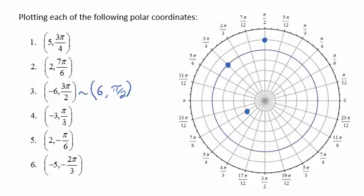Negative 3, pi over 3. We first go to the rotation of pi over 3. If it were a positive 3 radius, it would be located here. The negative 3 radius again reflects it about the origin and locates it right here. Note that this ordered pair is equivalent to an ordered pair with a positive radius of 3, 4 pi over 3.